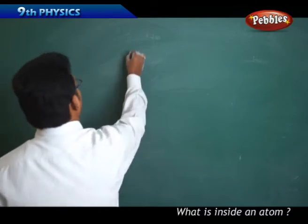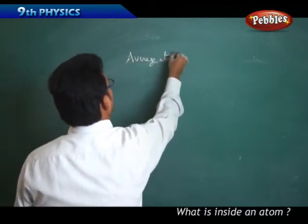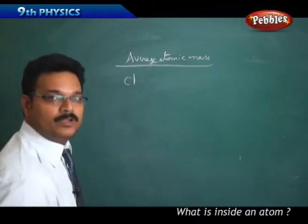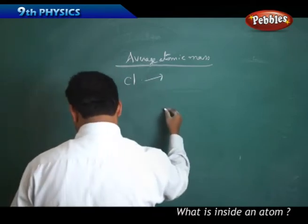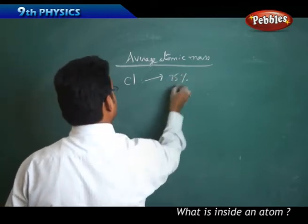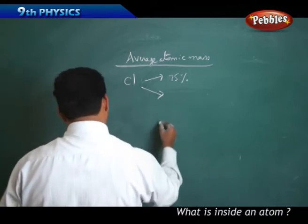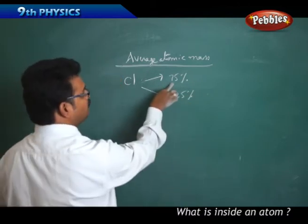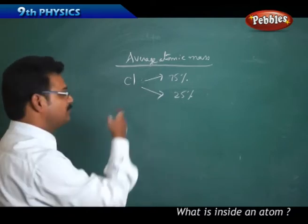For example, average atomic mass - take chlorine. Chlorine has isotopes. One isotope is 75% existing in nature, another isotope is existing 25% in nature. So this isotope mass, this isotope mass, we'll take and take the average to get the chlorine. How? See the board.